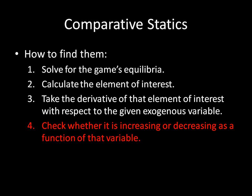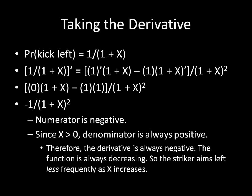Now for the final step: check whether the derivative is positive or negative. Going back, the numerator is negative 1, and since X is greater than 0, the denominator is always positive. Therefore the derivative is always negative — no matter what value of X we put in. That means the function is decreasing, always decreasing in X. So the striker aims to the left less frequently as X increases.